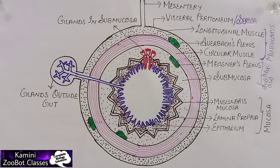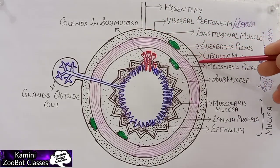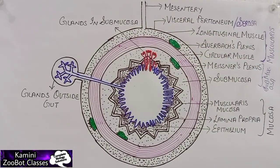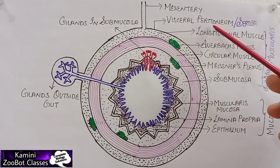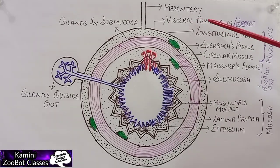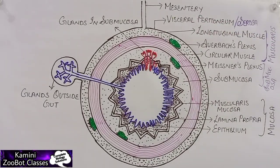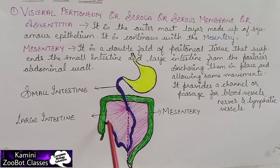The serosa is the outermost or external layer, formed by a layer of peritoneum — that's why it is called the visceral peritoneum or serosa membrane. This visceral peritoneum is continuous with the mesentery. The mesentery is present inside the large intestine in a ring-like structure.